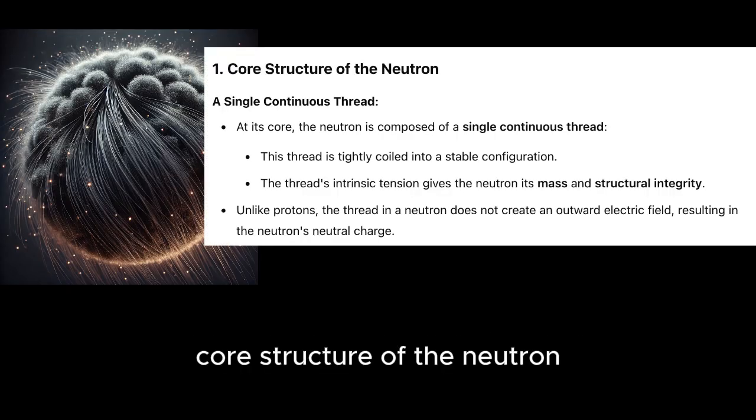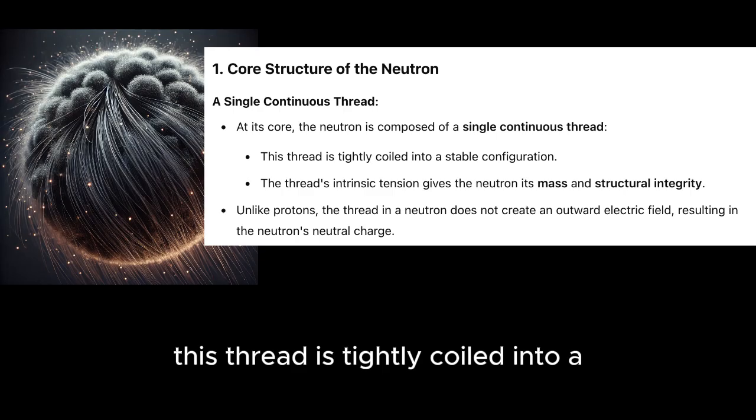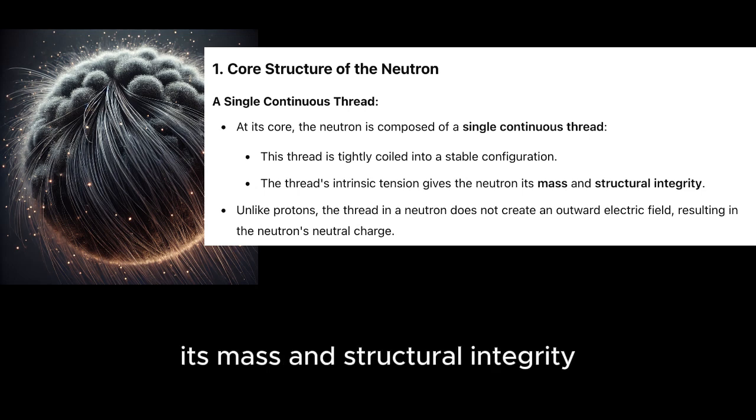Core structure of the neutron: a single continuous thread. At its core, the neutron is composed of a single continuous thread. This thread is tightly coiled into a stable configuration. The thread's intrinsic tension gives the neutron its mass and structural integrity.